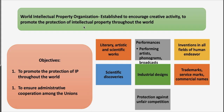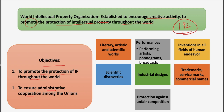This organization is the global forum for intellectual property services, policy, information and cooperation. It was established to encourage creative activity and to promote the protection of intellectual property throughout the world. It is a self-funding agency of the United Nations with 192 member states, and its mission is to lead the development of a balanced and effective international intellectual property system that enables innovation and creativity for the benefit of all. It promotes the protection of intellectual property throughout the world through cooperation among states and in collaboration with any other international organization, and also ensures administrative cooperation among the unions.